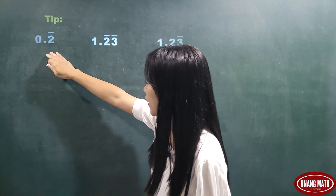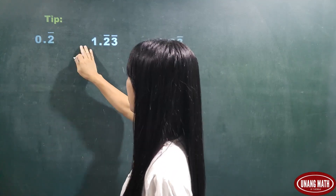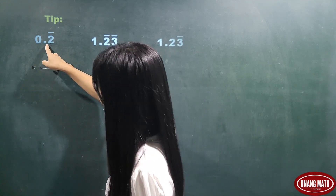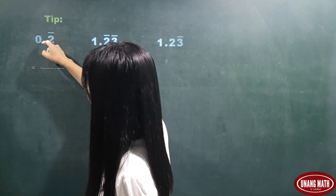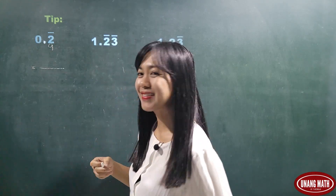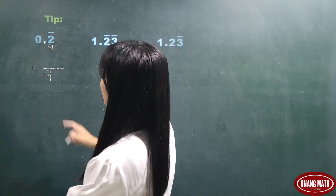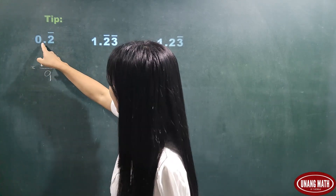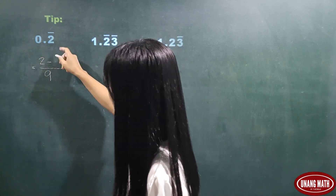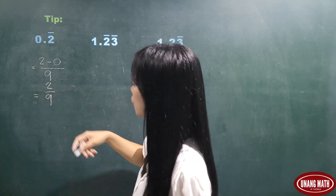Let's convert some repeating decimals to fractions. Starting with 0.2 repeating. To find the denominator, check the digits to the right of the decimal point. Since 2 is repeating, we represent this as 9. So our denominator is 9. To get the numerator, take all the digits without minding the decimal point — we have 2 — then subtract the non-repeating digit. We don't have non-repeating digits.